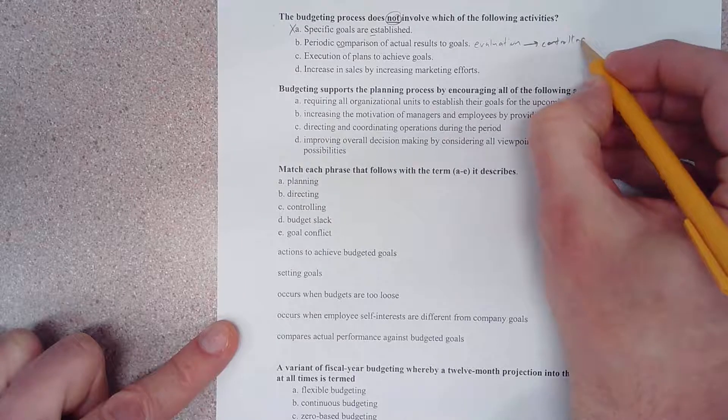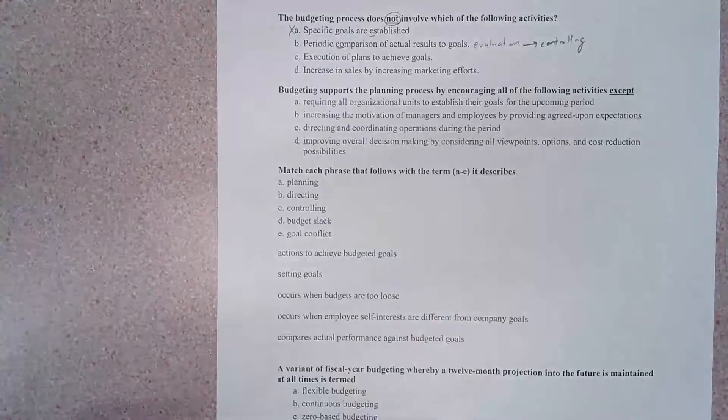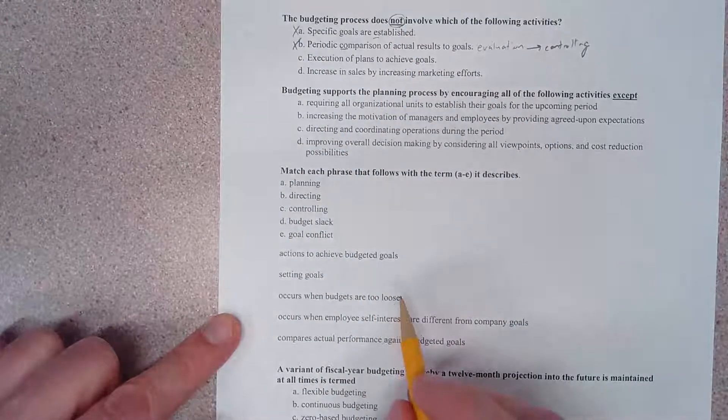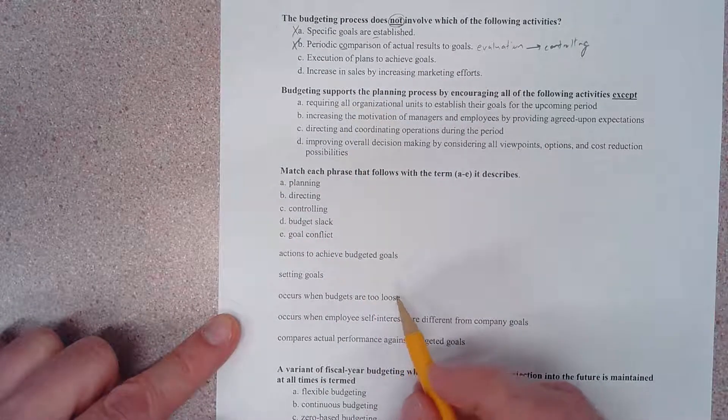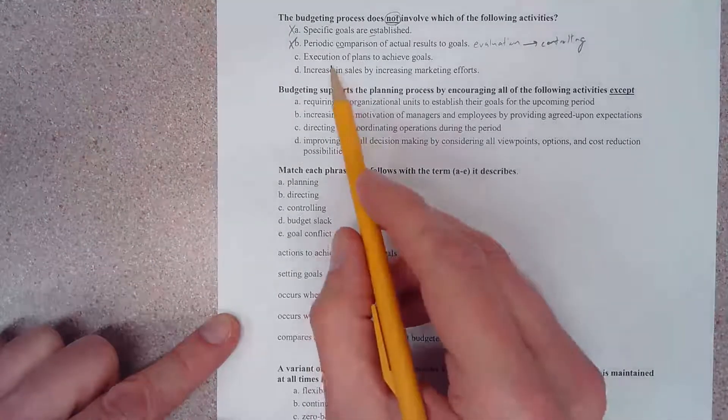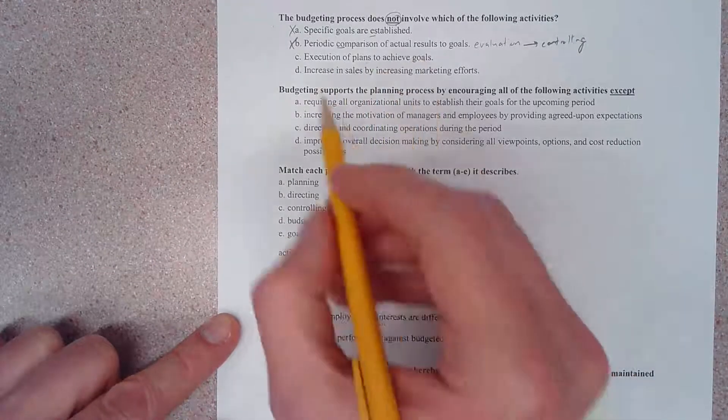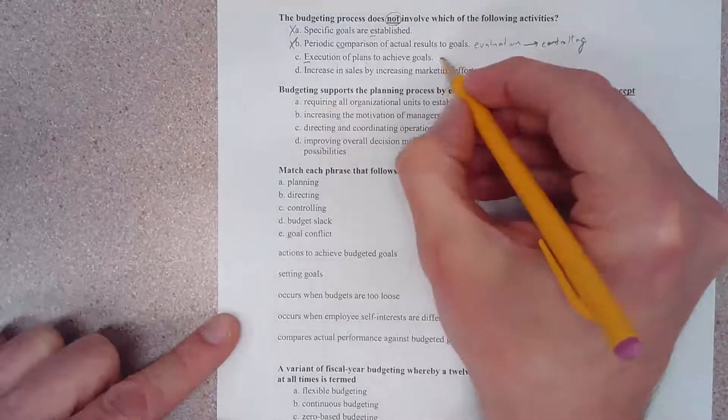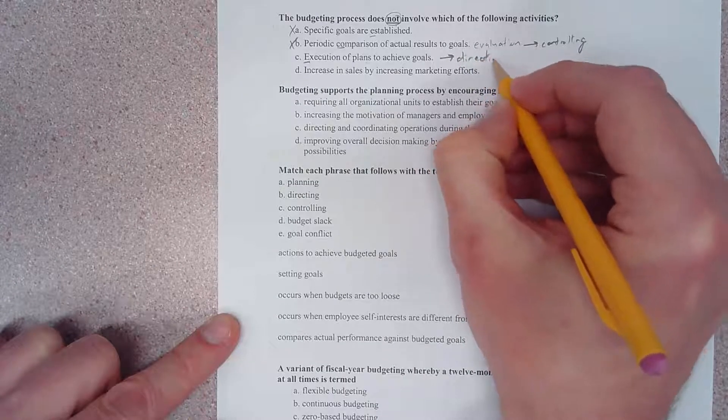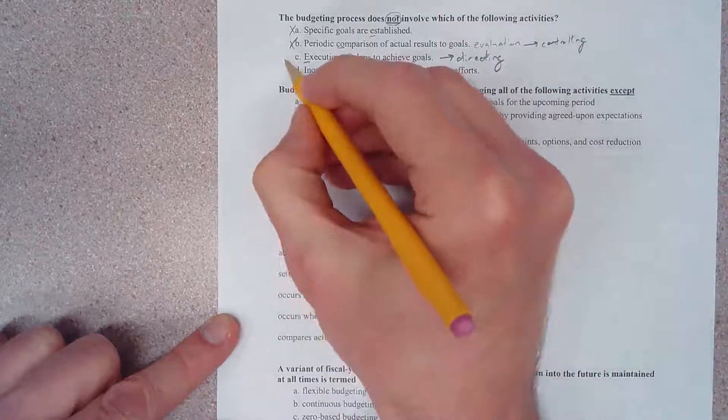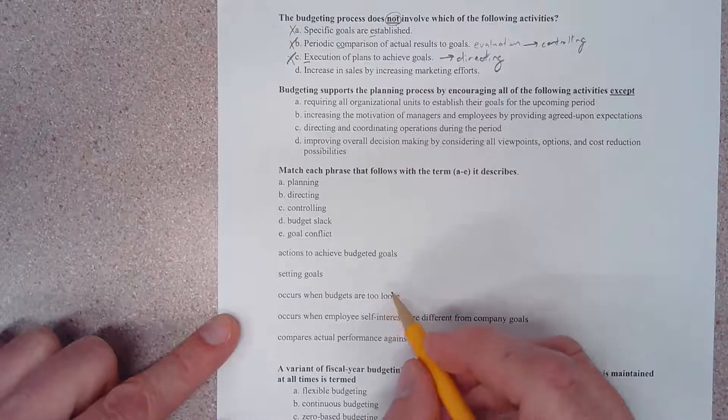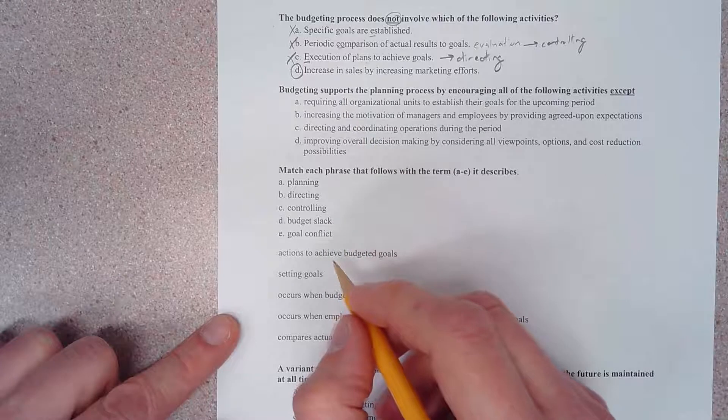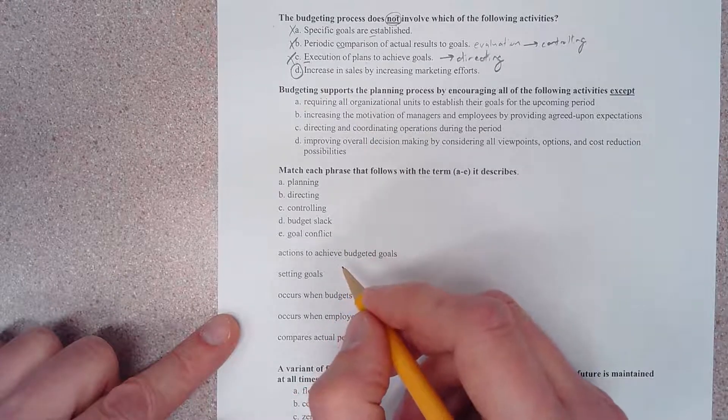Choice B says periodic comparison of actual results to goals. Well, this word comparison here is a part of evaluation, and evaluation is part of the control process. So this is most definitely a part of the budgeting process. Therefore, again they're asking for not, so that is an incorrect answer. Execution of plans to achieve goals - one of our three E's related to the process of directing. So that is also an incorrect answer.